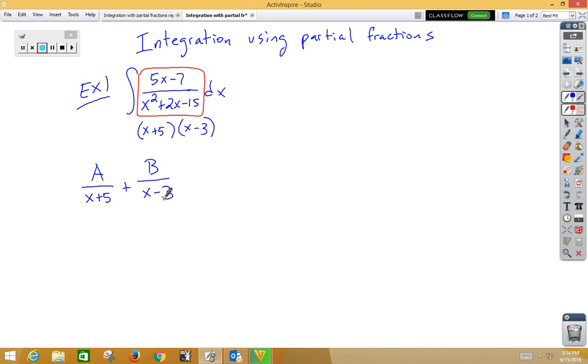So, the A is going to need to multiply by x minus 3. The B is going to need to be multiplied by x plus 5. So, I've got A times x minus 3 plus B times x plus 5, and that needs to equal the numerator of the original problem, 5x minus 7. If that doesn't make sense to you, then you should watch the previous video on partial fractions.